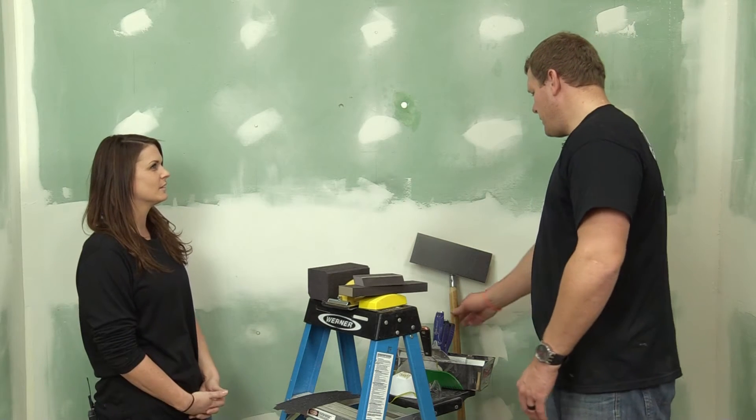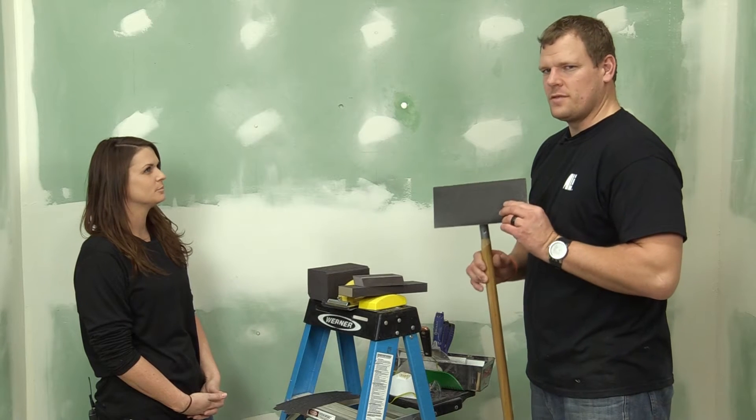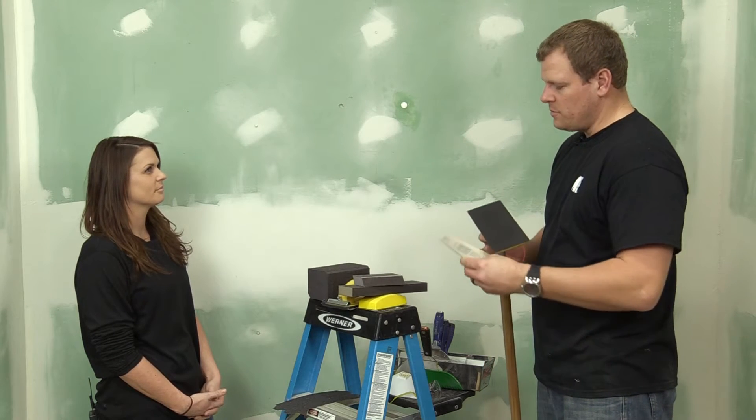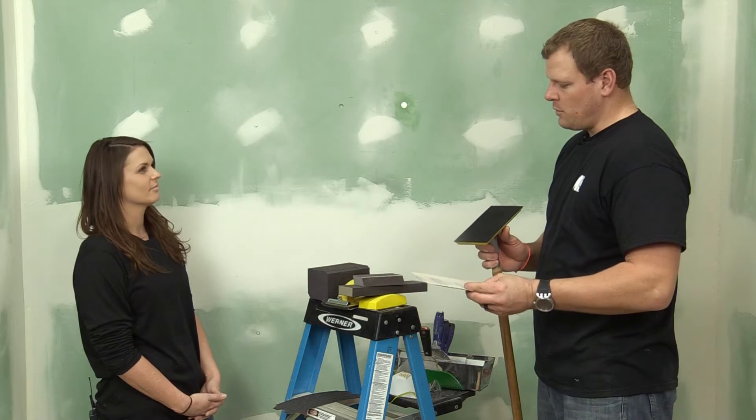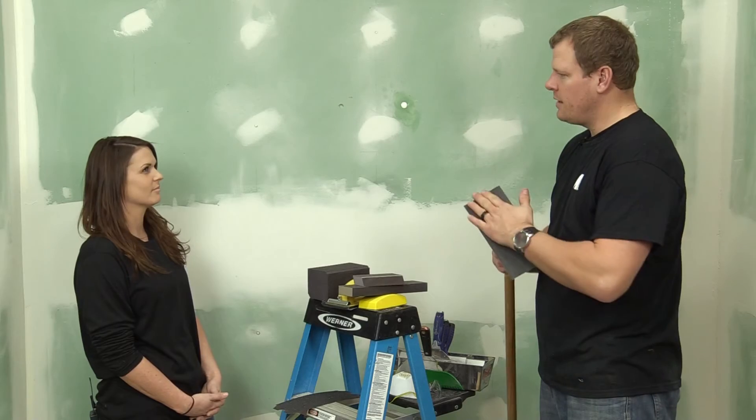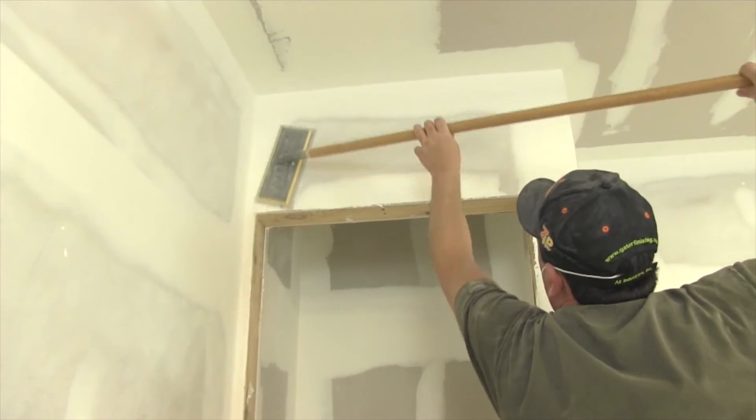Well, you always want to have, in my opinion, a good pull sander. The reason why I like this one is because it has a hook and loop system. It's real easy to apply—you just slap a sheet of sandpaper on there, it'll stay on there, it won't fall off.